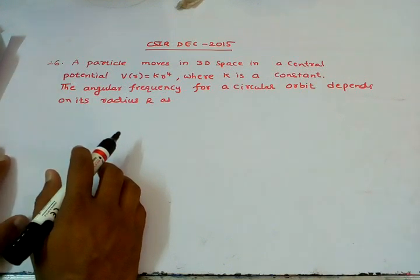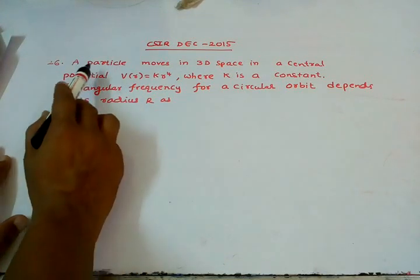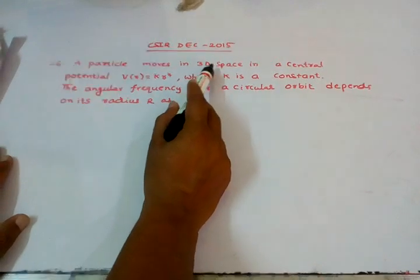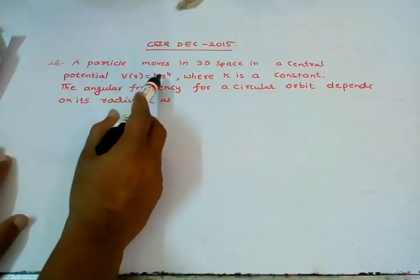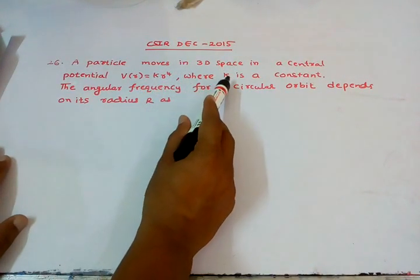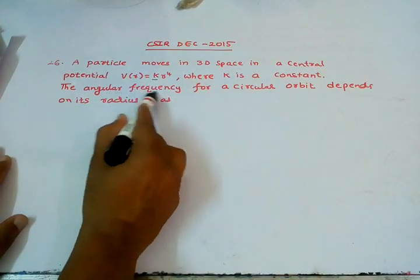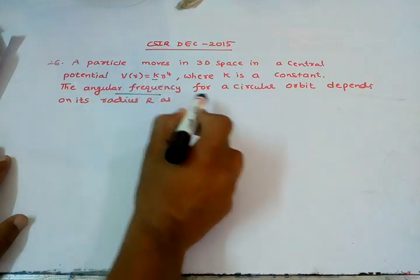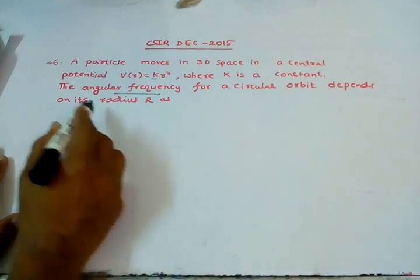Today I am discussing CSIR December 2015 classical mechanics question. See the question: A particle moves in three-dimensional space in a central potential V(r) = Kr⁴, where K is a constant. The angular frequency for a circular orbit depends on its radius R as...